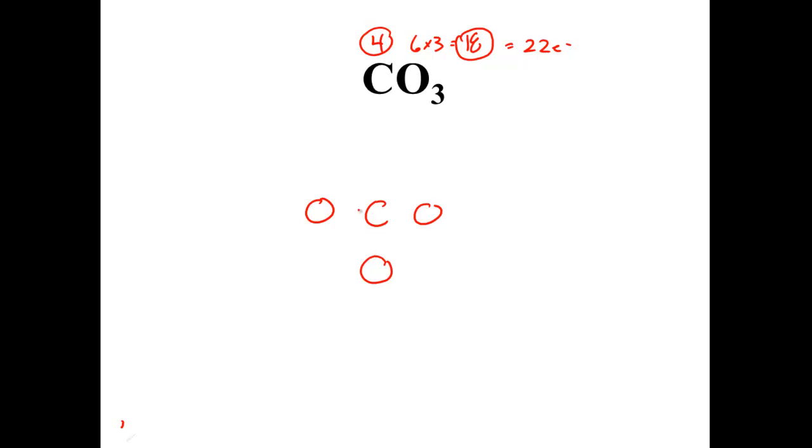Step number 3 in our process is to put down the initial bonds between them. So now I've made my covalent bonds. This is how they're going to stick together because they're bonded. So now I've used 6 electrons, I'm down to 16 electrons left.